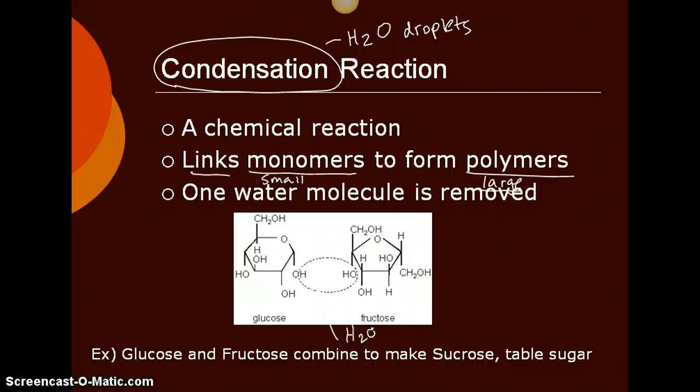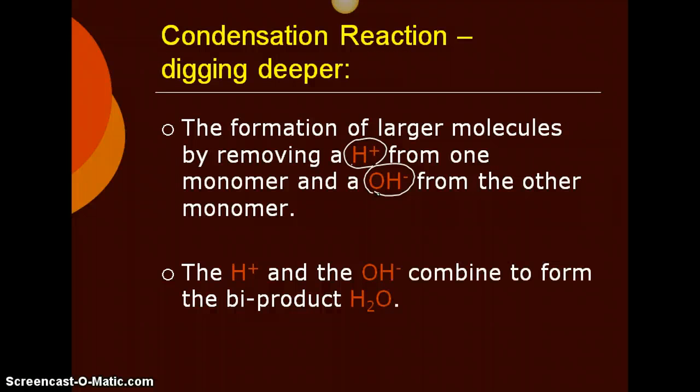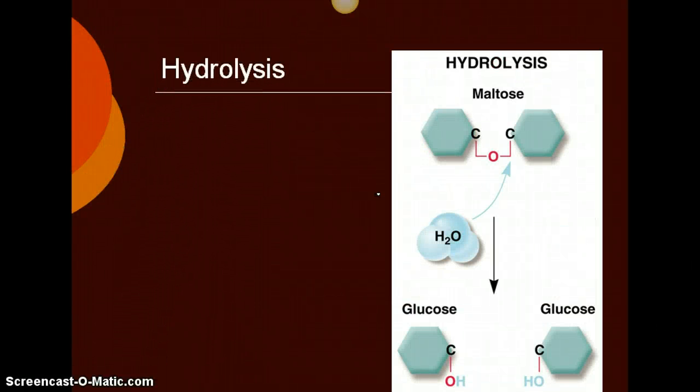So again, condensation reaction: a water molecule is removed, it leaves an open spot for a bond to happen, and so the two monomers link together. Looking at it just a little bit deeper, larger molecules are being formed because we remove a hydrogen ion and we remove a hydroxide ion from the two monomers. That produces H2O, and it leaves an open space for this bond to happen. That open space has to be filled, and so the two monomers link together. I'll show you that in a review video here in a moment.